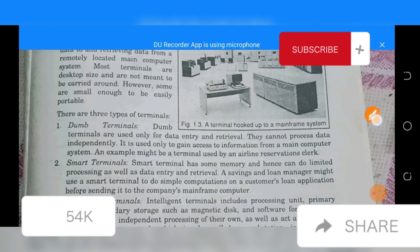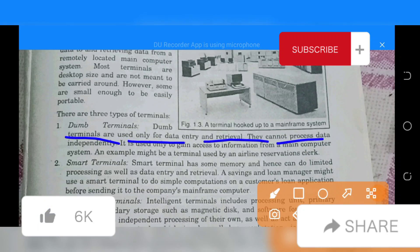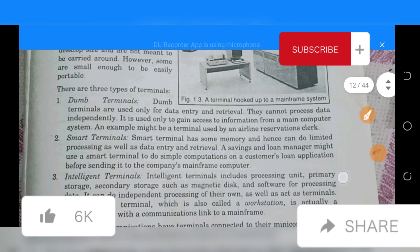Number one: Dumb terminals. Dumb terminals are used only for data entry and retrieval. They cannot process data independently. It is used only to gain access to information from a main computer system. An example might be a terminal used by an airline reservation clerk.